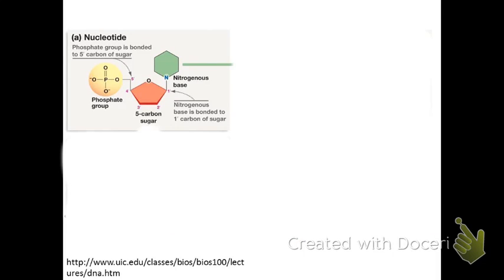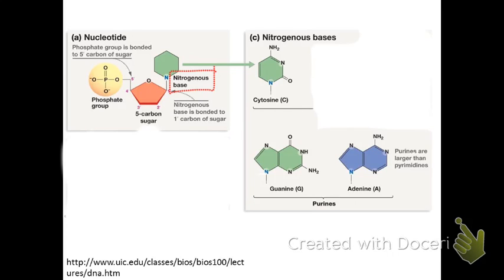The base, which is also called a nitrogenous base or a nitrogen-containing base, can be cytosine, guanine, adenine, thymine, or in RNA, you'll find uracil. So you've got thymine in DNA and uracil in RNA.